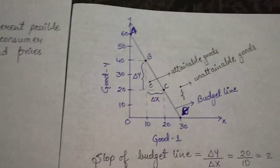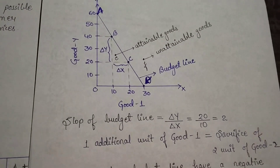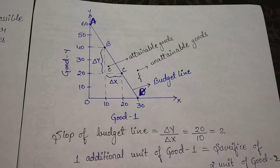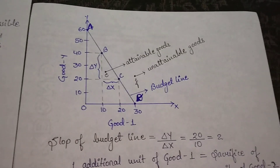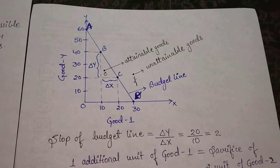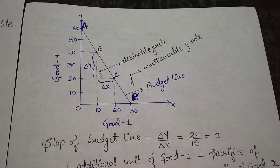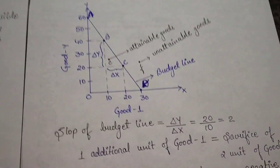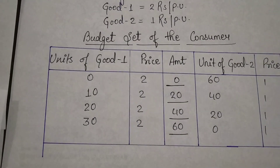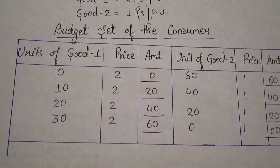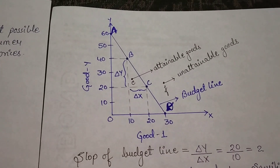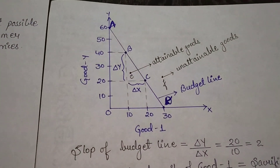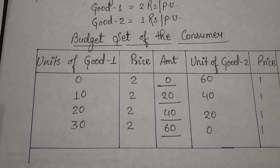Now look at the diagram. On the x-axis it is good one, on the y-axis it is good two. On the x-axis: 0, 10, 20, 30; on the y-axis: 20, 40, 60. Based on the schedule we have drawn the diagram.